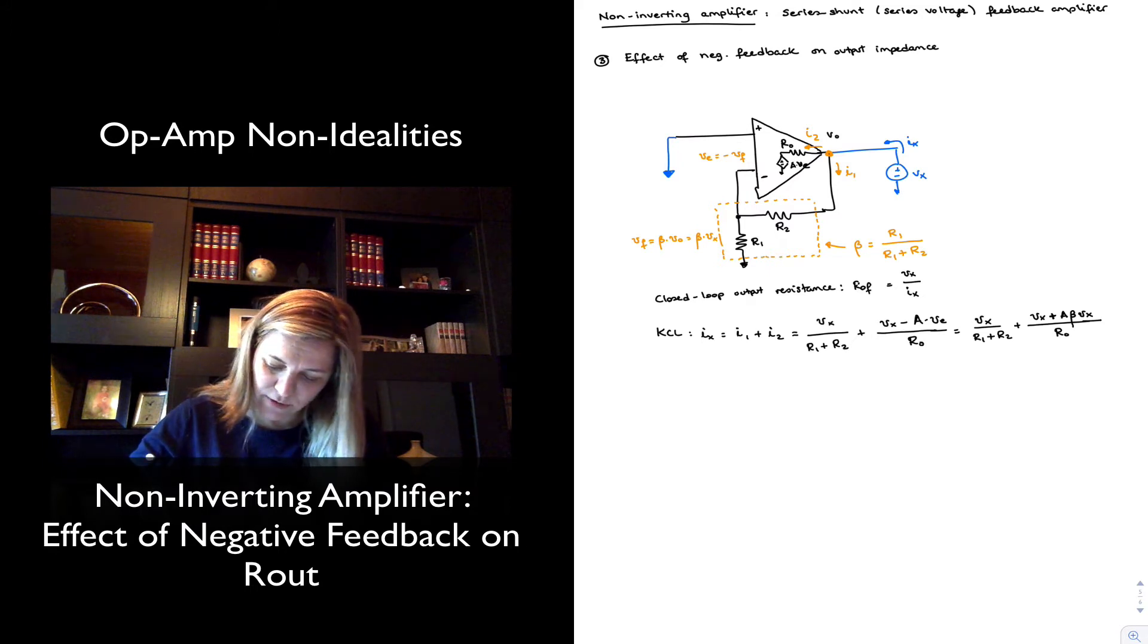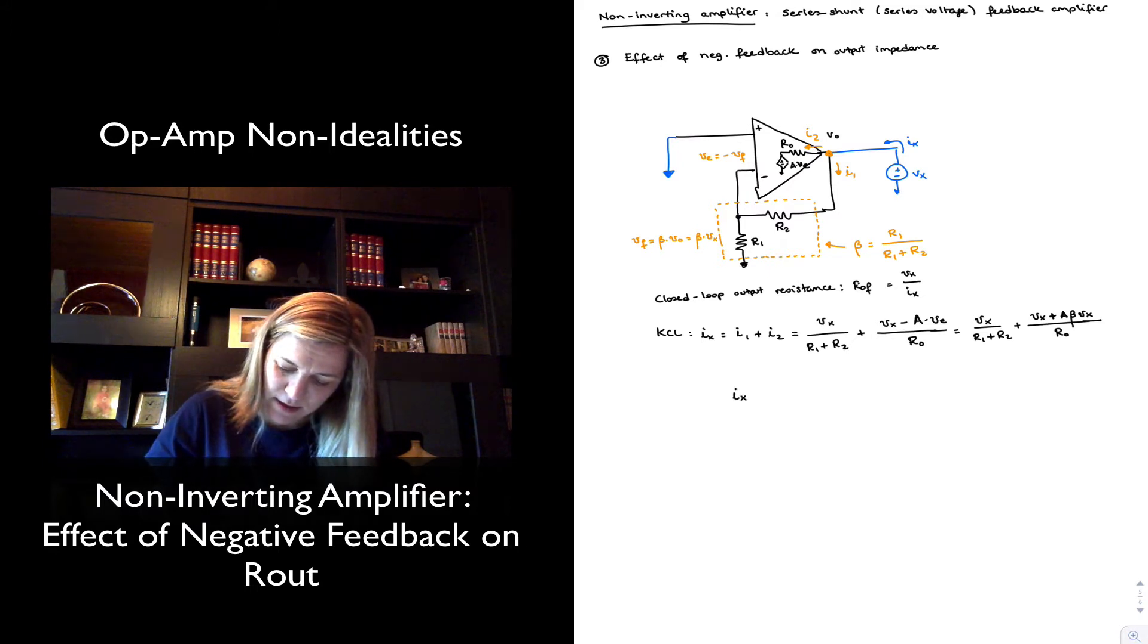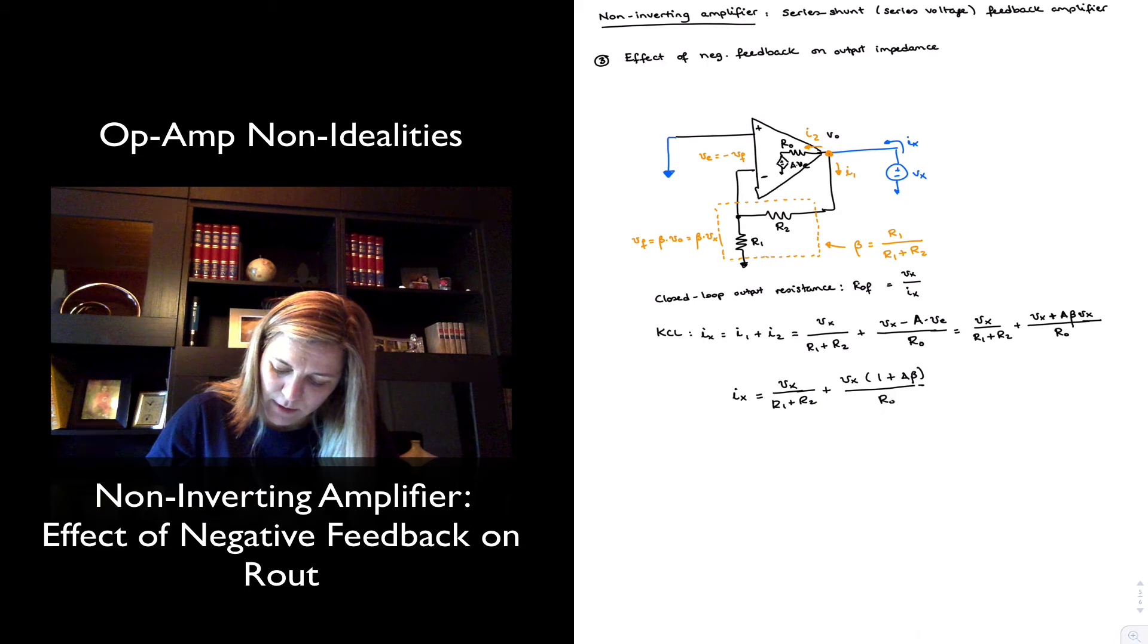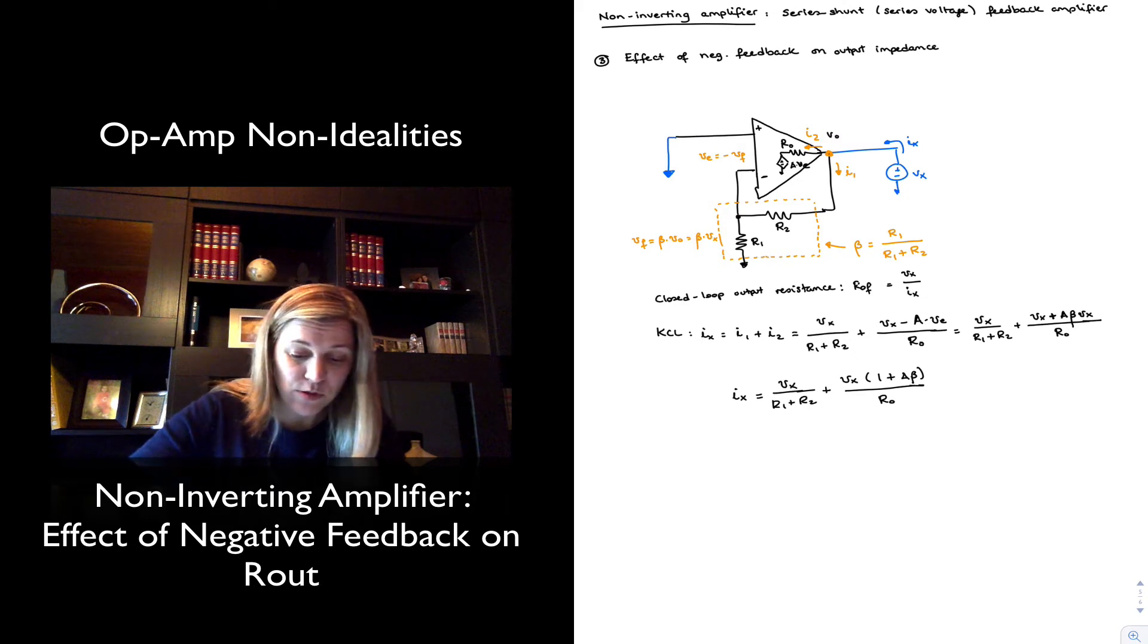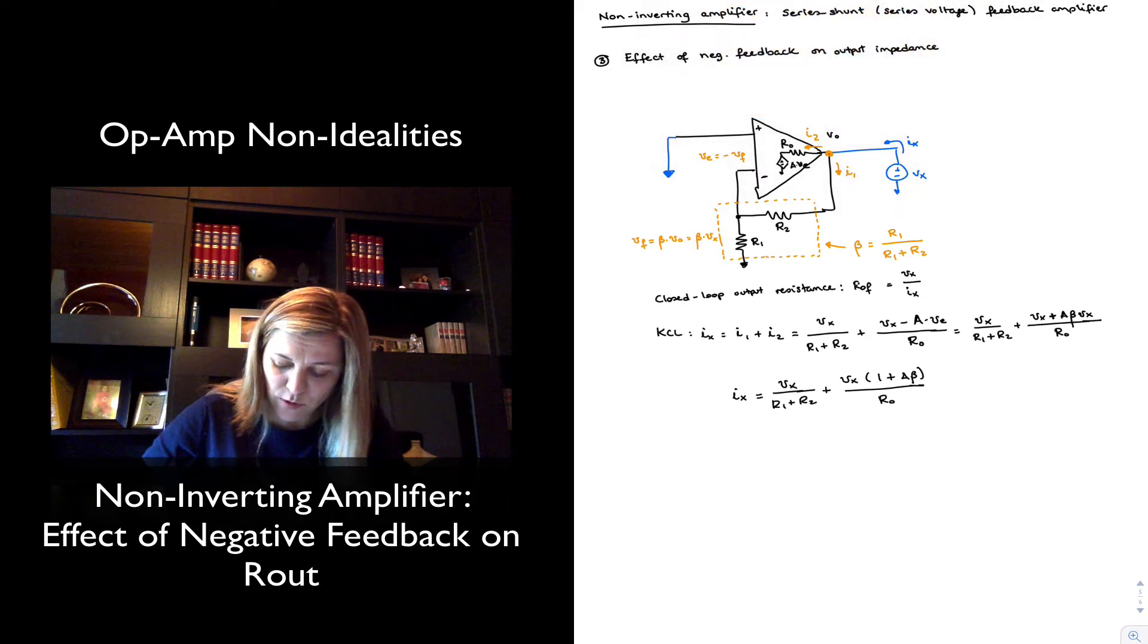So I can further rewrite this as Ix equal to Vx over R1 plus R2 plus, I can factor out Vx, 1 plus A times beta, there it is again, divided by R out. Now these are the two terms. Remember, these were the terms for current I1 and current I2.